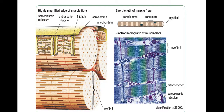Surrounding this muscle fiber we also have what's known as a sarcolemma, which is a modified membrane that goes around the muscle fiber. The sarcolemma goes into the muscle fibers using these T-tubules. We also have a modified endoplasmic reticulum called a sarcoplasmic reticulum.